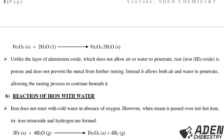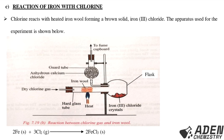Number two: the reaction of iron with water. Iron does not react with cool water in the absence of oxygen. However, when steam is passed over red-hot iron, tri-iron tetraoxide and hydrogen gas are formed. When a metal reacts with steam, we get a metal oxide and hydrogen gas. The equation is: 3Fe(s) + 4H2O(g) → Fe3O4(s) + 4H2(g).